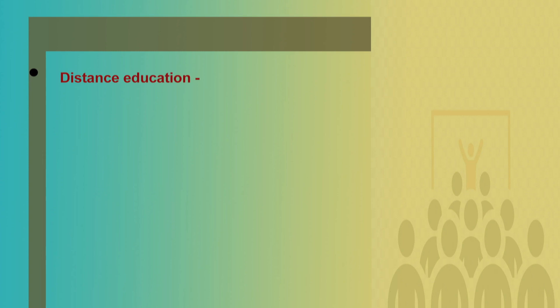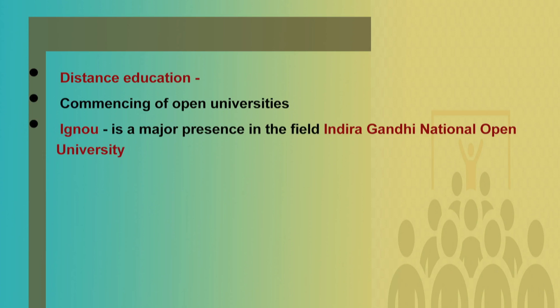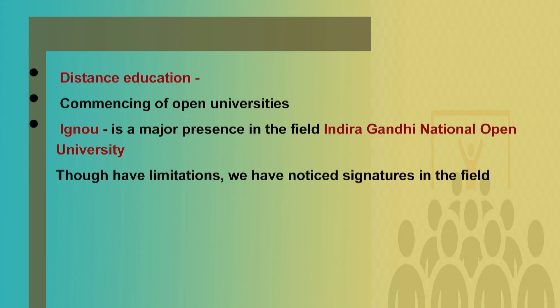Another thing is distance education. In a country like ours, it is difficult to bring everyone to classrooms because social responsibilities are high and financial status is behind compared to other countries. It may not be possible to bring all who intend to have higher education to colleges or universities — there comes the significance of distance education. Almost all universities have open education and distance education cells. Students can register and do the course. IGNOU, the Indira Gandhi National Open University, is a major presence in this field, and though there are limitations, we have noticed its significance.